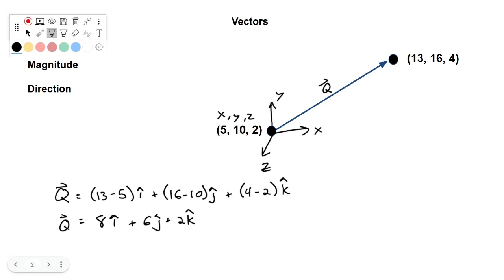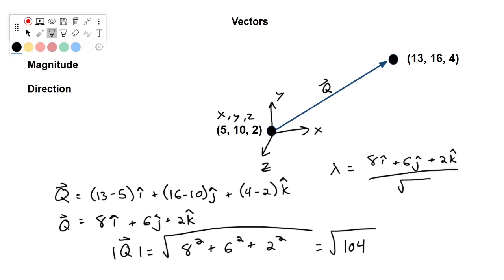And if we want the magnitude of that vector, well, in the last example with two dimensions, we used Pythagorean's theorem. Here we're applying the same approach, but we're going to do it in three dimensions. So we're going to say 8 squared plus 6 squared plus 2 squared, and we're going to take the square root of that. So that's going to be square root of 104. So not quite as nice of a number.